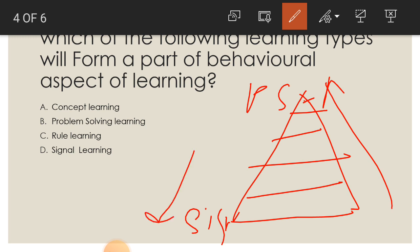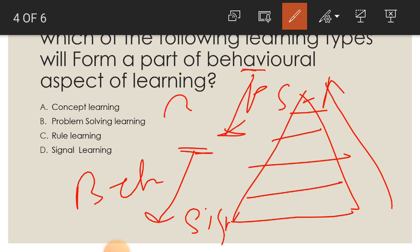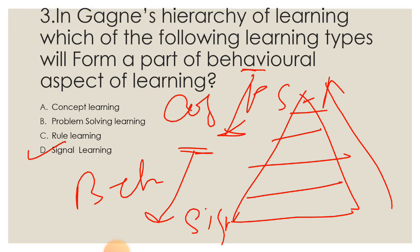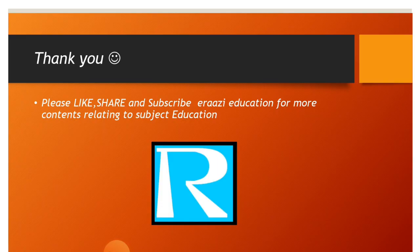The lower four types — signal learning, SR learning, chaining, and verbal association — come under the behavioral aspect of learning, while the upper four are cognitive. Therefore, signal learning forms a part of the behavioral aspect of learning, making D the correct answer.